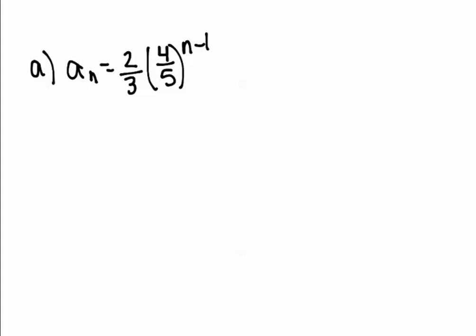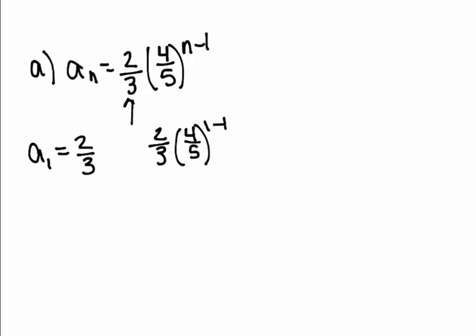Moving on to the next example, part A asks us to find the first three terms of the sequence. The sequence is geometric and given in formula format. This 2/3 is my first term, so A1 equals 2/3. You could also get that by plugging in 1 for n: 2/3 times 4/5 to the power of 1 minus 1, which is 0. Anything to the 0 power equals 1, giving you 2/3.